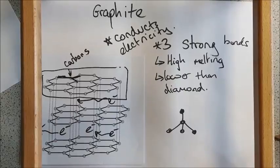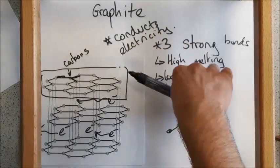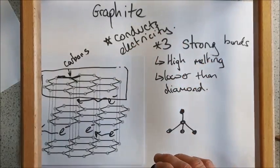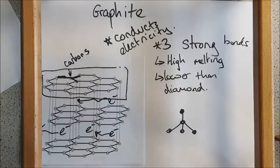So graphite is also used as a lubricant because these layers can slip off and have a lubricating action. It's how pencils work. The layers slide off the graphite of your pencil and leave behind a layer on your page.